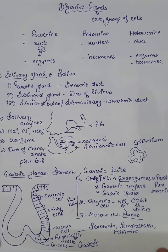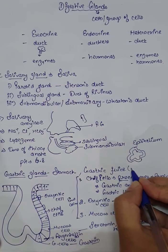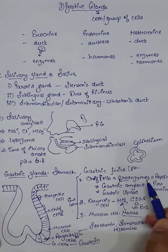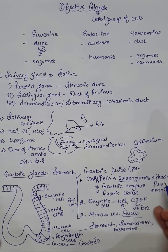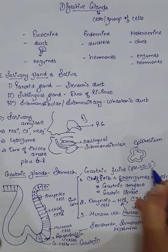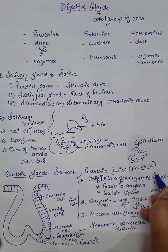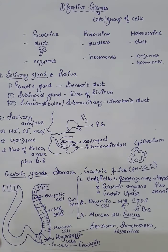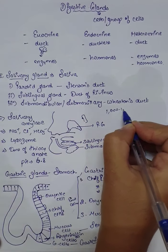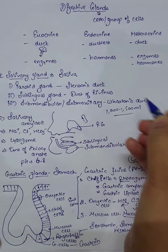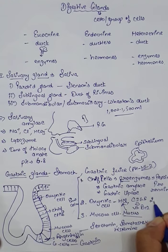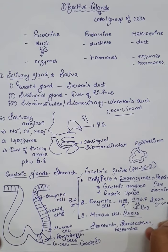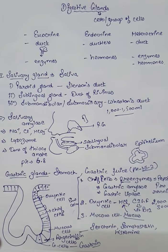pH is highly important because each enzyme functions at a specific pH. The stomach pH is approximately 1.5 to 2, meaning it is highly acidic. Regarding secretion volumes, salivary glands secrete about 1000 to 1500 ml of saliva per day, and about 2000 to 3000 ml of gastric juice is secreted in the stomach per day.